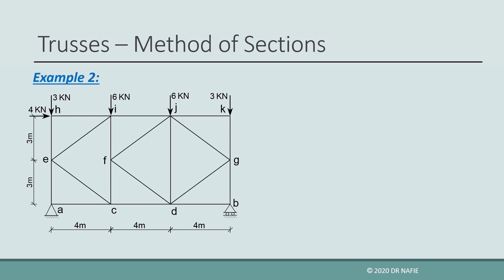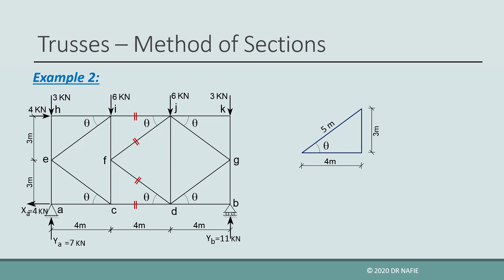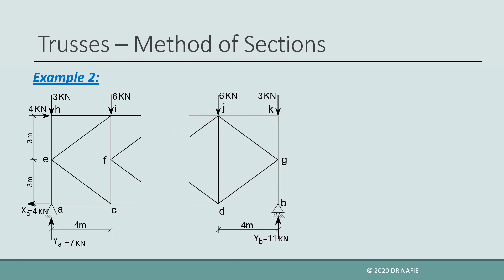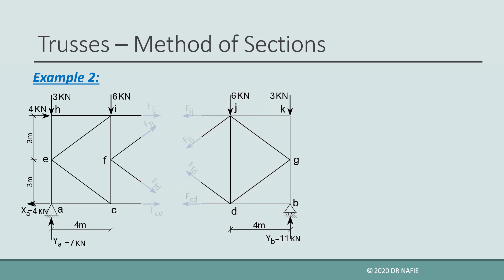Let us look at another example. For the strong K truss, we need to evaluate the internal forces in the marked members using the method of sections. First, we evaluate the reactions, then find the angles of inclination of the inclined members. All inclined members have the same angle theta, with cosine theta equal to 0.8 and sine theta equal to 0.6. If we cut through the members that need to be evaluated, we find that we must cut through four members, giving four unknown internal forces — but we only have three equilibrium equations, which are not enough to solve all four.